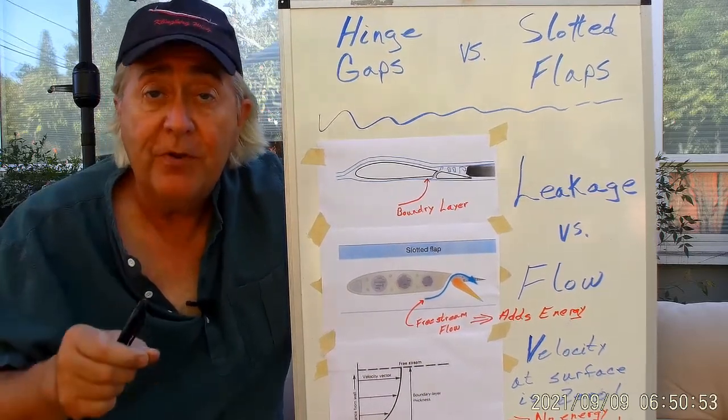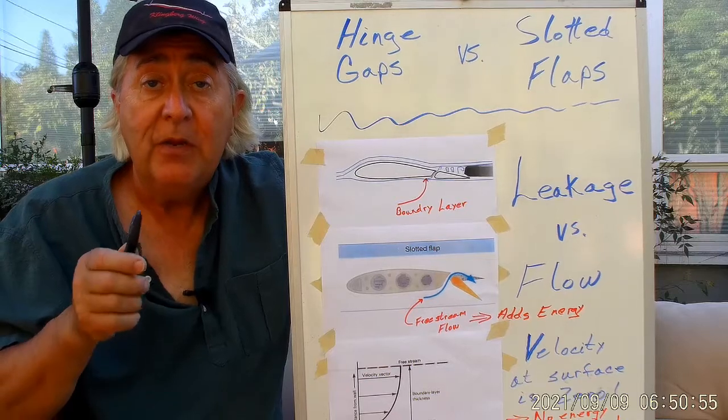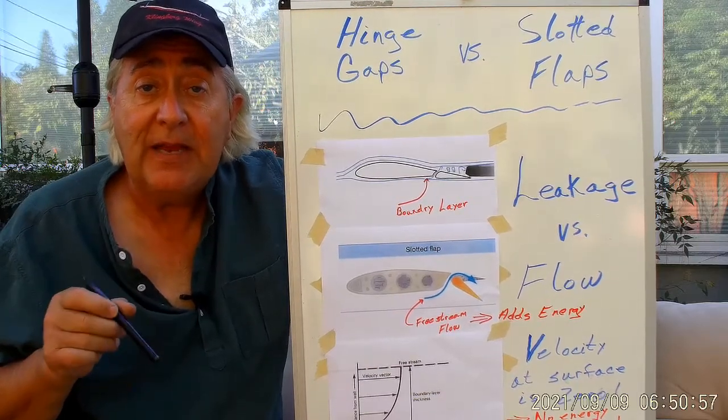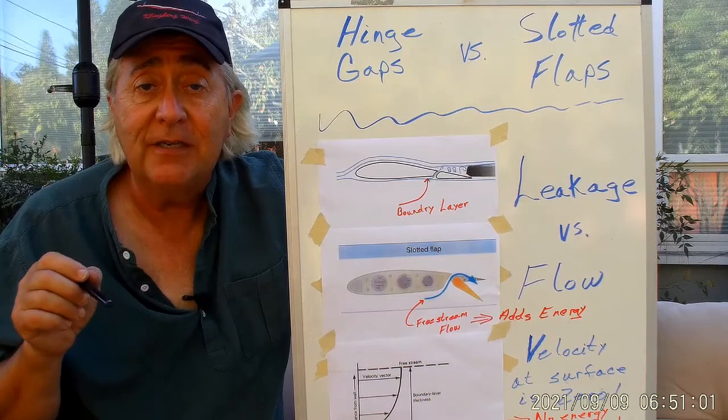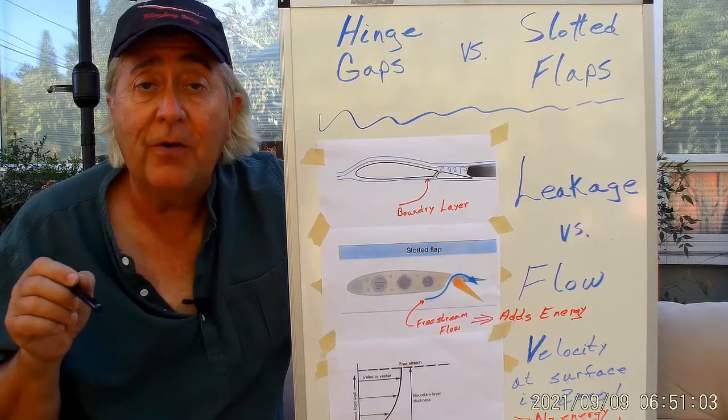And if you've been following, you know I've had an issue with my wing with air leaking in the gap between the elevon and the main wing panel, causing premature separation of the flow on the elevon.